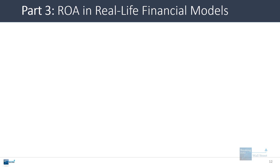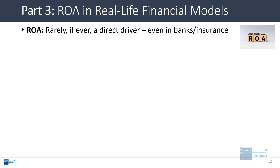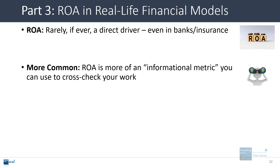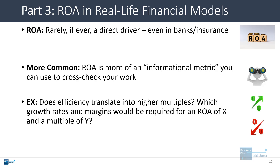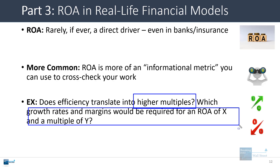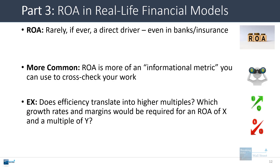Let's go to the last point about ROA and real-life financial models. Return on assets is rarely, if ever, a direct driver. Even if you're modeling a bank or insurance firm, you're usually not going to drive the model based on return on assets. Instead, it's more of a metric you calculate after the fact to cross-check and sanity-check your work, making sure you haven't done anything out of line or unreasonable. For example, if you're assuming one bank is more efficient than another, does that actually translate into higher multiples in your model? If one bank has a higher ROA, are its PE and price-to-book multiples higher? If you're assuming they'll get to a certain ROA, what growth rates and margins would be required and what valuation multiple would that imply? This is how you typically use it in financial models, even in industries where ROA is more significant.